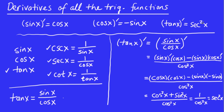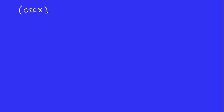You want to memorize this formula so you don't have to go through all these steps every single time you need the derivative of tan x. Now let's find the derivative of cosecant x. We use the fact that cosecant x is one over sin x, and then apply the quotient rule.